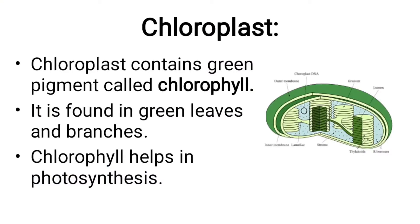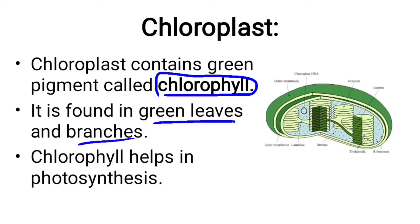Chloroplasts are found in plant cells and contain a green pigment called chlorophyll. Chloroplasts are not present in animal cells. Chlorophyll uses sunlight to carry out photosynthesis — the process by which plants make food using water and carbon dioxide in the presence of sunlight. Chloroplasts function specifically in photosynthesis.